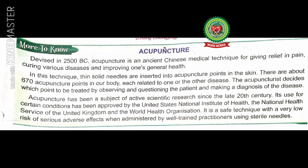Devised in 2500 BC, acupuncture is an ancient Chinese medical technique for giving relief in pain, curing various diseases, and improving one's general health. In this technique, thin solid needles are inserted into acupuncture points in the skin. There are about 670 acupuncture points in our body, each related to one or another disease. The acupuncturist decides which point to treat by observing and questioning the patient and making a diagnosis.